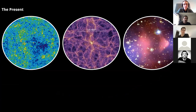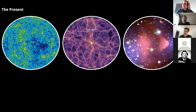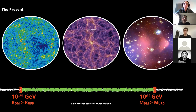Everything we know about dark matter at present is due to its gravitational interactions. We have really excellent high-precision maps from the cosmic microwave background, from the organization of clusters of galaxies in large-scale structure, and from observations of things like the collisions of galaxy clusters — for example the bullet cluster — that give us really precise information about the gravitational interactions of dark matter. These also tell us a lot about dark matter's particle properties; for example, it bounds the mass of the dark matter particle to within about 87 orders of magnitude.